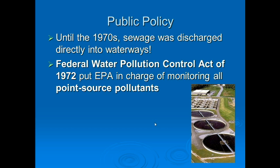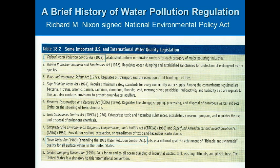Until the 1970s, sewage was discharged directly into waterways. The Federal Water Pollution Control Act of 1972 put the EPA in charge of monitoring all point source pollutants. It established uniform nationwide controls for each category of major polluting industries.